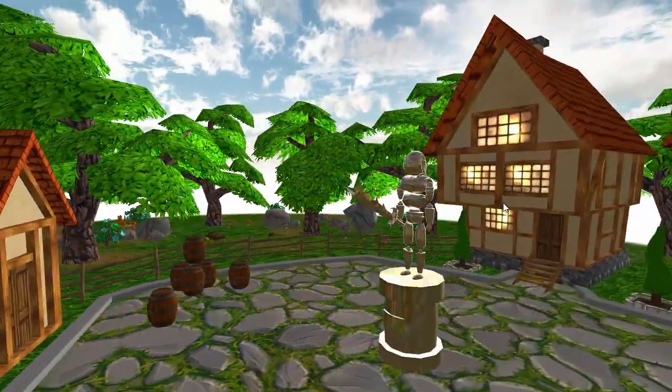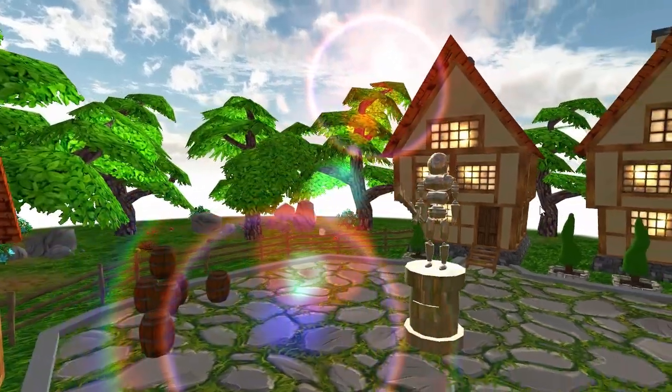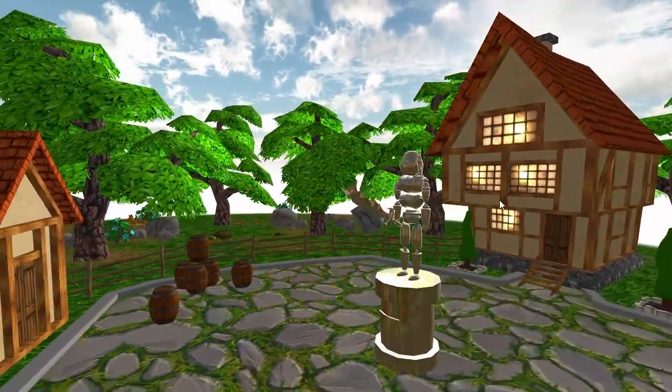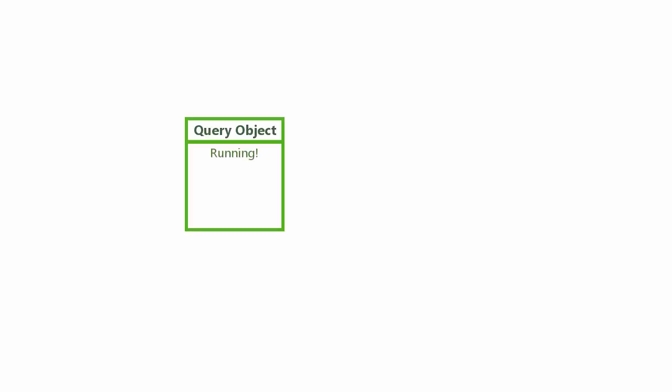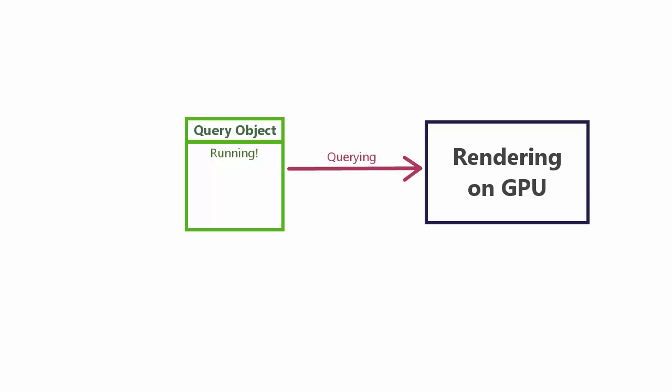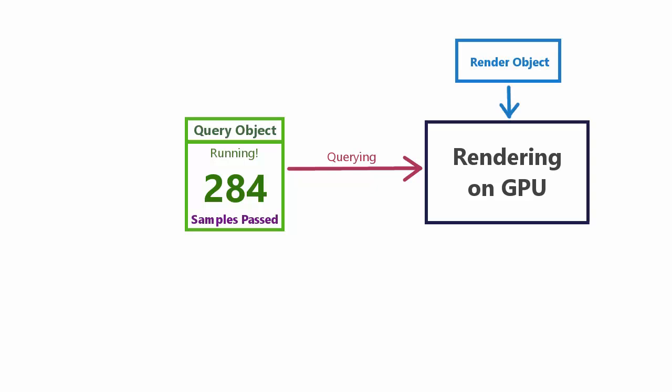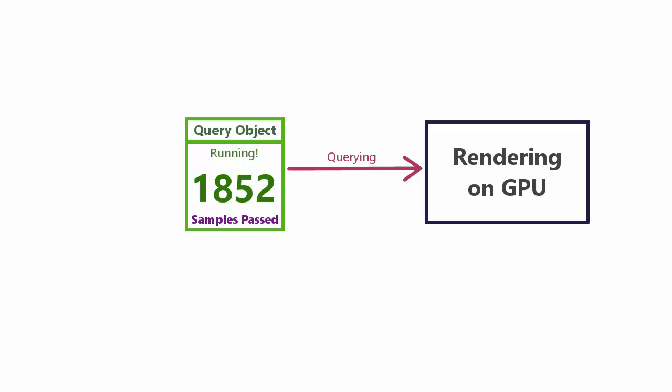First I'm going to give a quick overview of how queries work in OpenGL, then we'll look at how to apply them to our specific situation. Before you can carry out a query, you first need to create a query object. You can then start the query, and while it's running, anything you render will be queried. The queries don't actually affect the rendering process — objects render as normal — but OpenGL will count how many fragments pass the depth test, essentially counting how many pixels are visible and actually get rendered. Once you've finished rendering everything you want to query, you stop the query and retrieve the result.